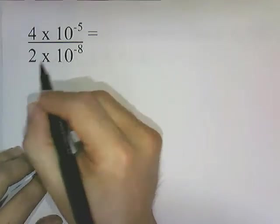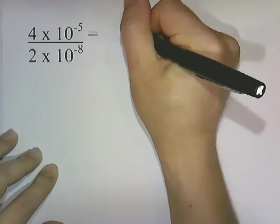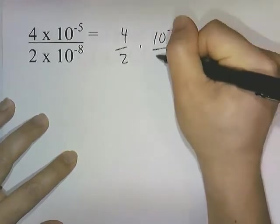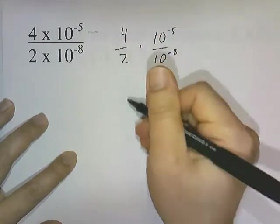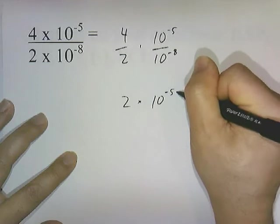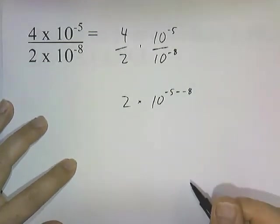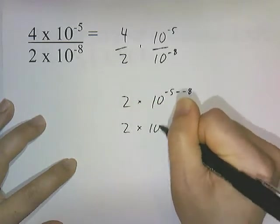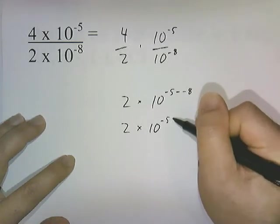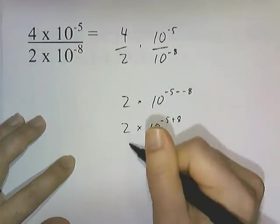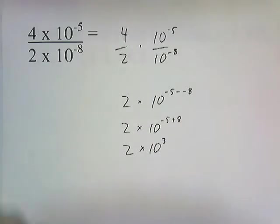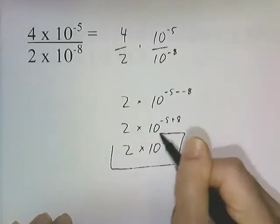Let's try another one: 4 times 10 to the negative 5th divided by 2 times 10 to the negative 8th. This becomes 4 divided by 2, times 10 to the negative 5th divided by 10 to the negative 8th. 4 divided by 2 is 2. And 10 to the negative 5th minus negative 8 — minus a negative becomes plus — so that's 10 to the negative 5th plus 8, which is 10 to the 3rd. The final answer is 2 times 10 to the 3rd.